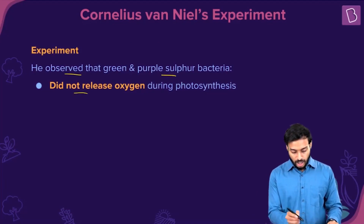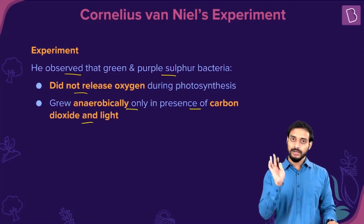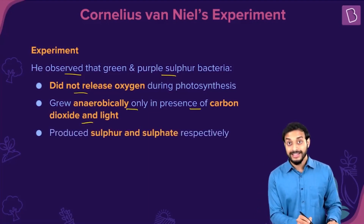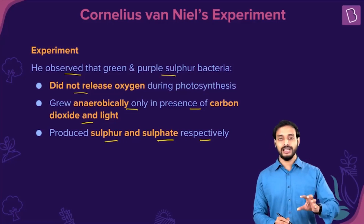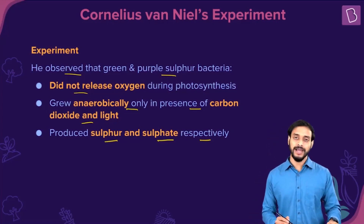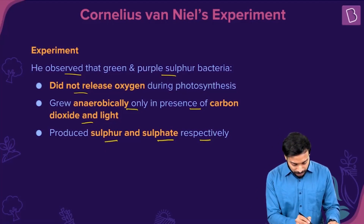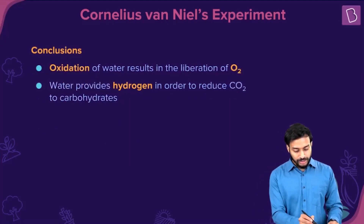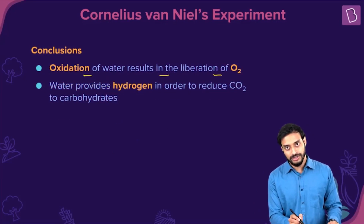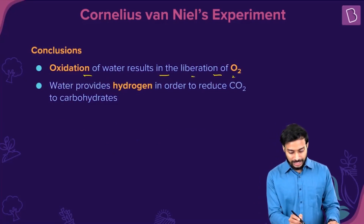He observed that green and purple sulfur bacteria did not release oxygen during photosynthesis. They grew anaerobically only in the presence of carbon dioxide and light, and produced sulfur and sulfate respectively as byproducts — not oxygen. The conclusion: oxidation of water, not carbon dioxide, results in the liberation of oxygen.